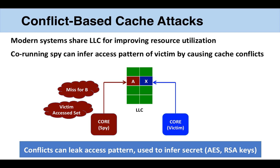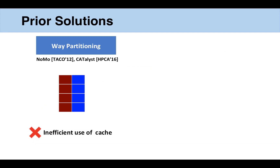Such conflict-based attacks have been shown to infer secrets such as keys for AES and RSA. Prior solutions for mitigating conflict-based cache attacks fall in two categories. First, way partitioning: give a few ways to each of the cores. Unfortunately, this results in inefficient use of cache space.